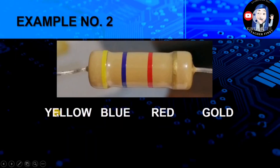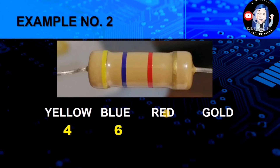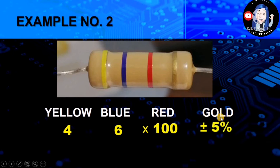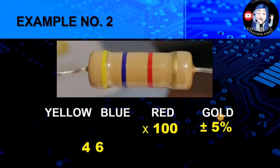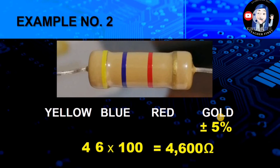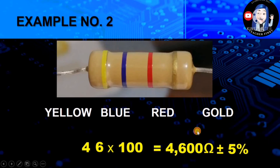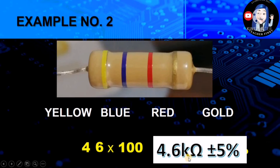Another example: we have colors yellow, blue, red, and gold. Yellow has a value of 4, blue has a value of 6. Red has a value of 2 in the first and second digit, so as a multiplier it has 2 zeros — therefore, a value of times 100. Gold has a value of plus/minus 5%. Putting them together, 46 multiplied by 100 gives 4,600 ohms plus/minus 5%, which simplifies to 4.6 kilohms plus/minus 5%.